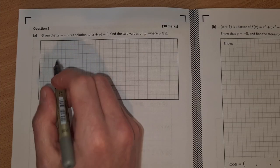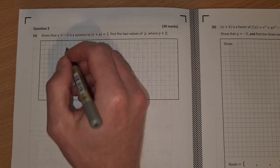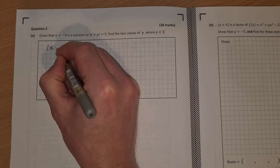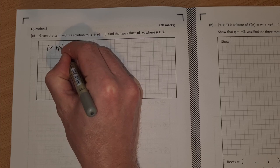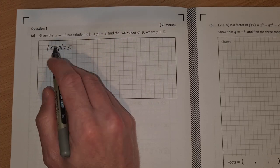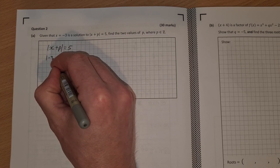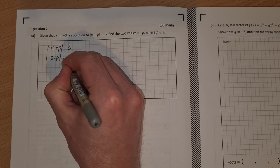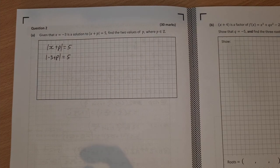So instead of x, we have the absolute value of x plus p is equal to 5. We're just going to sub in minus 3 instead of x. So the absolute value of minus 3 plus p is equal to 5.